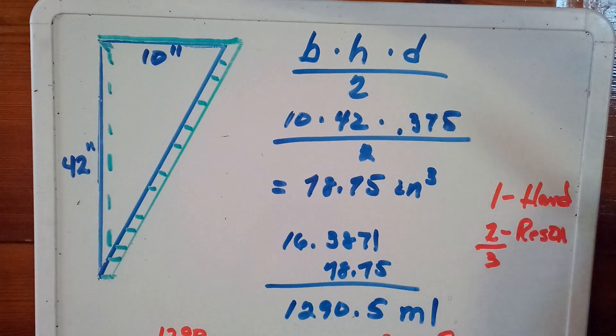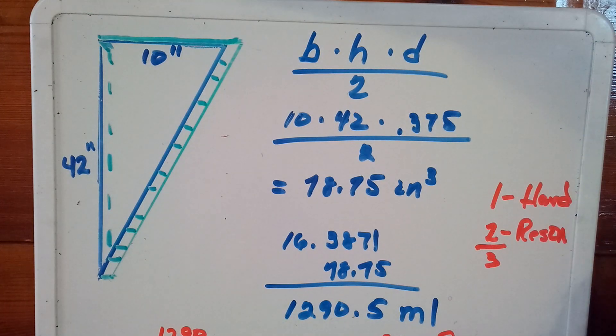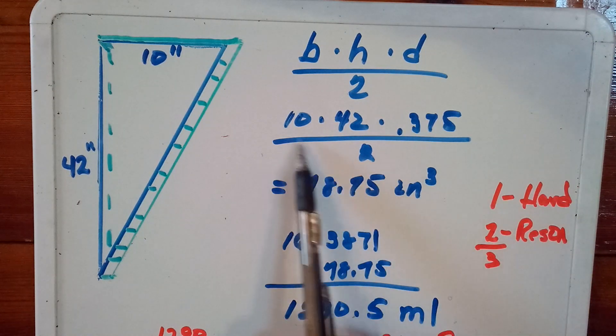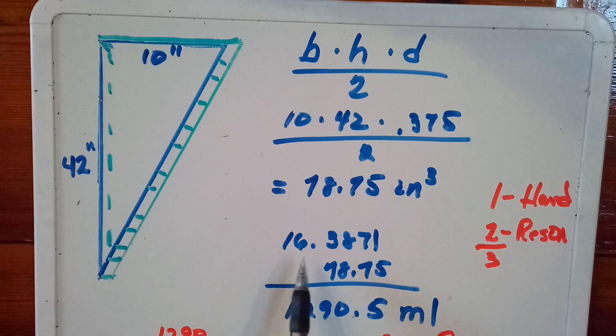I used three-eighths of an inch, which equates to 0.375, which is three divided by eight. Using decimals are handy when using a calculator. So here's my formula setup, and that yields 78 and three-quarters, or 78.75 cubic inches of material that I'm going to use. For every cubic inch, there are 16.3871 milliliters. So one inch equals 16.3871 milliliters. I like dealing milliliters because that is how it's sold.